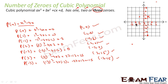Now let us join these points. Joining them, we get a smooth curve: joining this point, then this point, then this point, and then we have the final point. So we get the graph like this. We have all these points and we have got the graph.